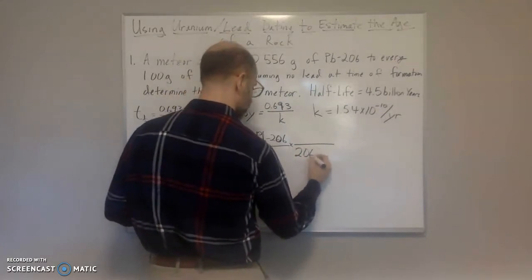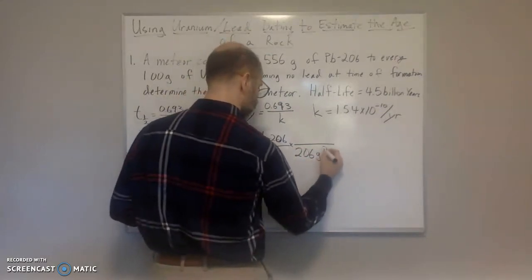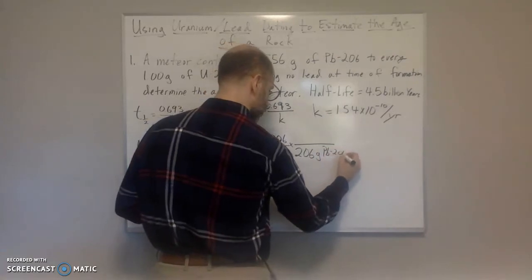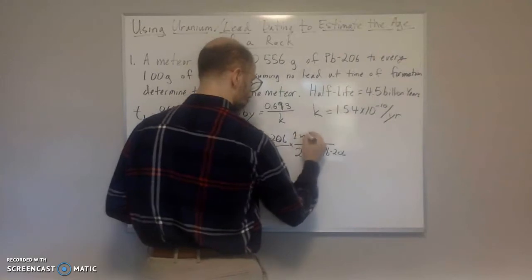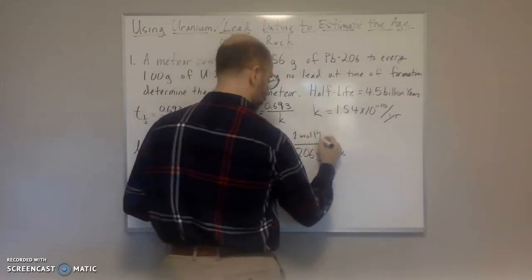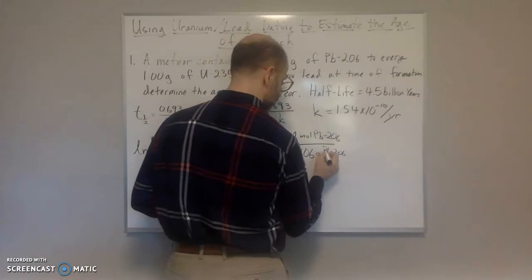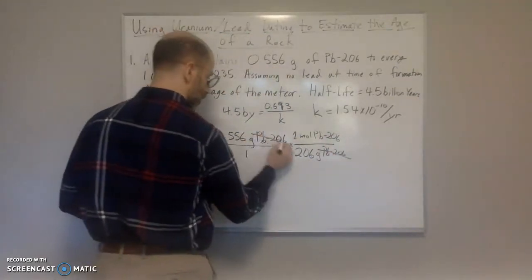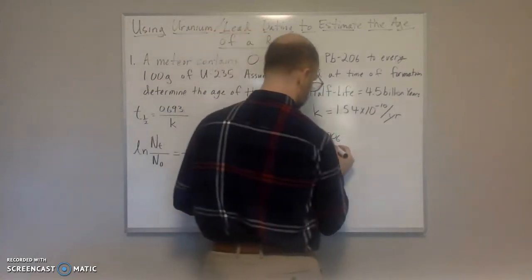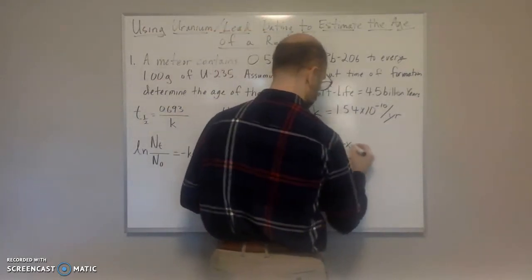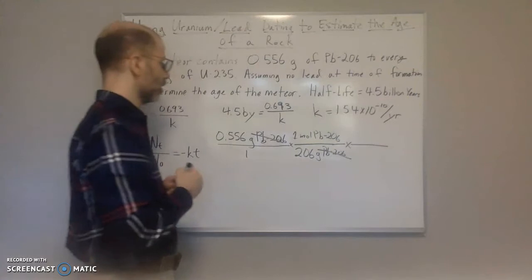So we're going to use that. So here, we would have, for example, 206 grams of Pb-206 is going to be equal to 1 mole of Pb-206. Grams cancel out. We've got moles.